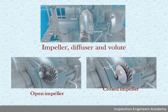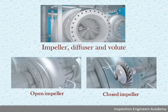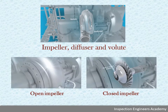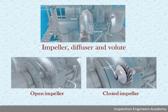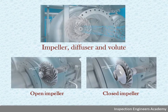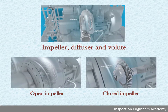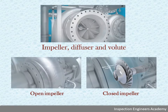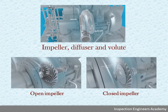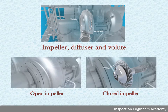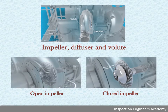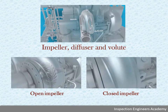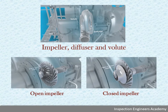In the enclosed design, the vanes are sandwiched between two discs. The open design has to deal with gas leakage between the moving vanes and the non-moving diaphragm, whereas the enclosed design does not have this problem. However, the enclosed design is more difficult and costly to manufacture.